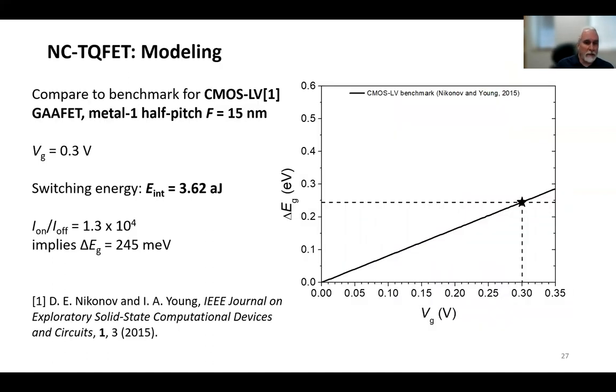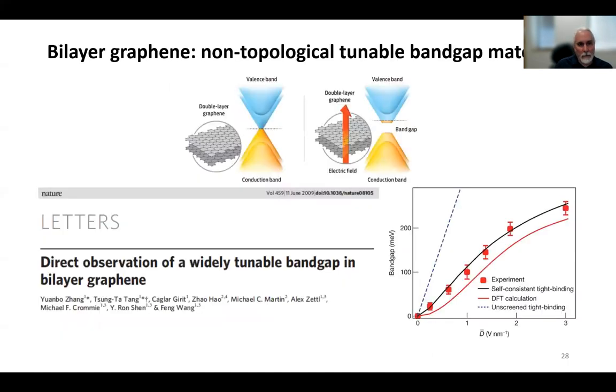So to model this device, we wanted to compare it to a benchmark, and so we compared it to a gate-all-around benchmark from the literature, sort of representing a CMOS low voltage device that switches at a gate voltage of 0.3 volts with a very low switching energy of 3.6 attojoules. And first, to compare this, I want to compare it to a non-topological material, bilayer graphene, which is non-topological but has a tunable bandgap. And so it's known that the bandgap in graphene varies with electric field and has been measured and can be tuned up to 250 millivolts, which is similar to the gate-all-around FET that I just showed in terms of the change in bandgap for on-off operation.